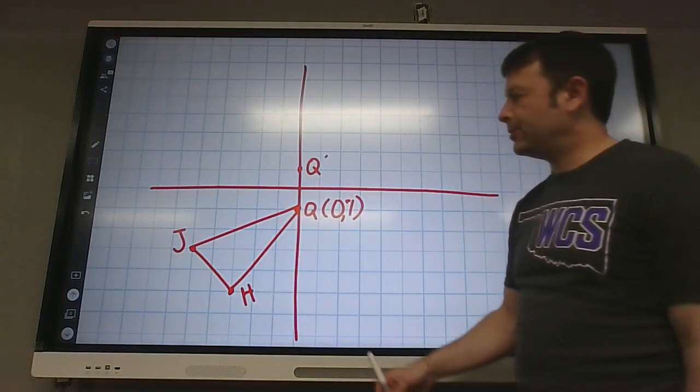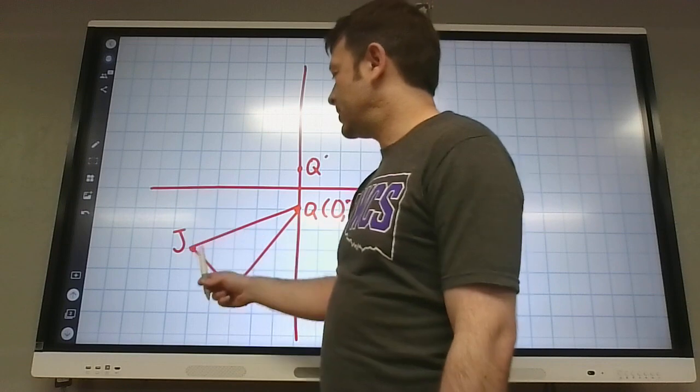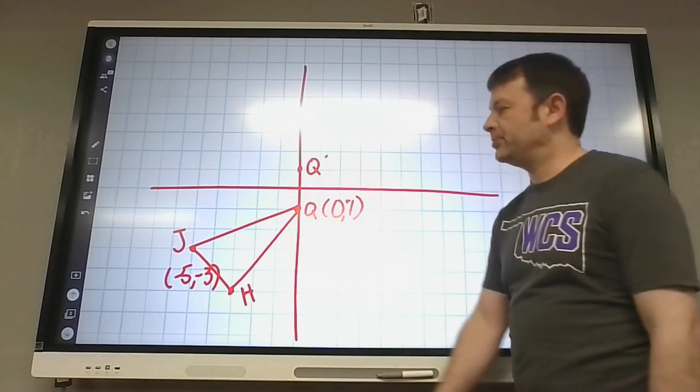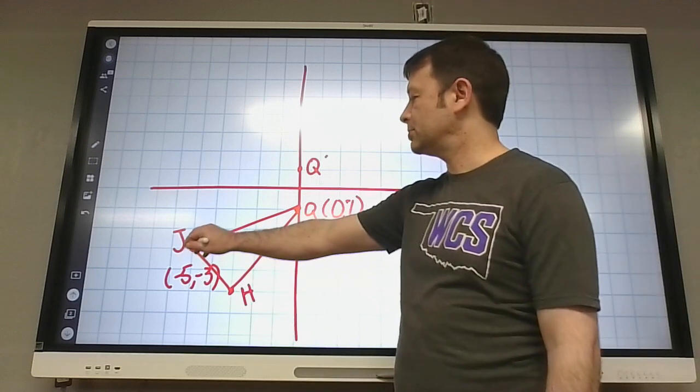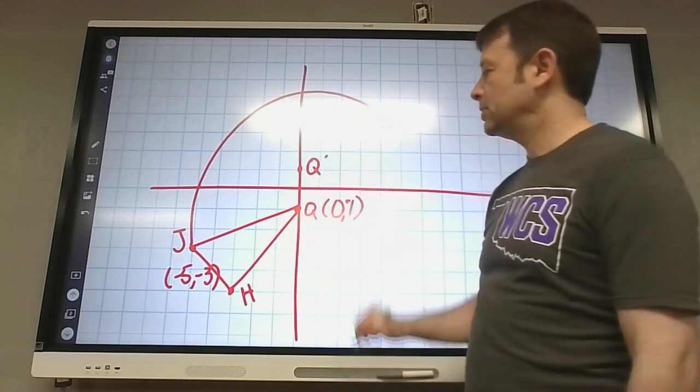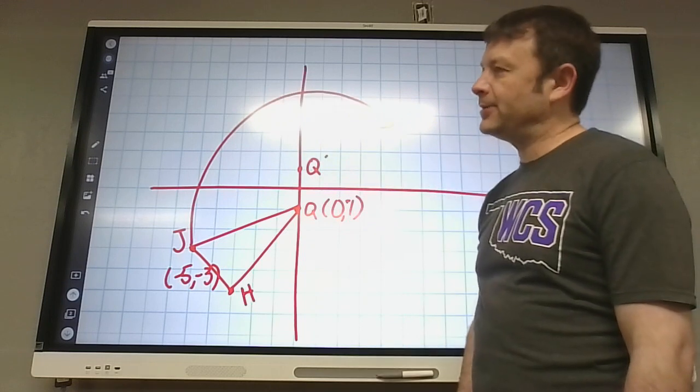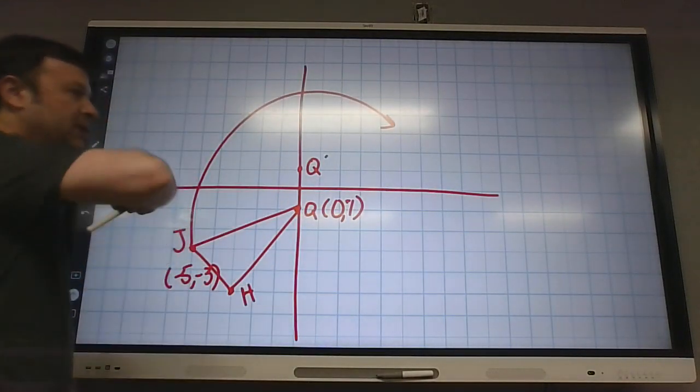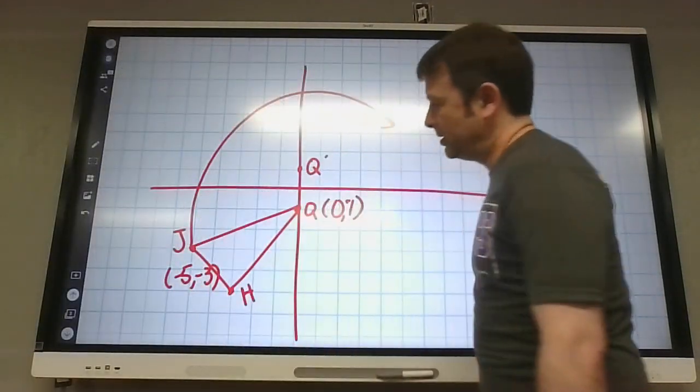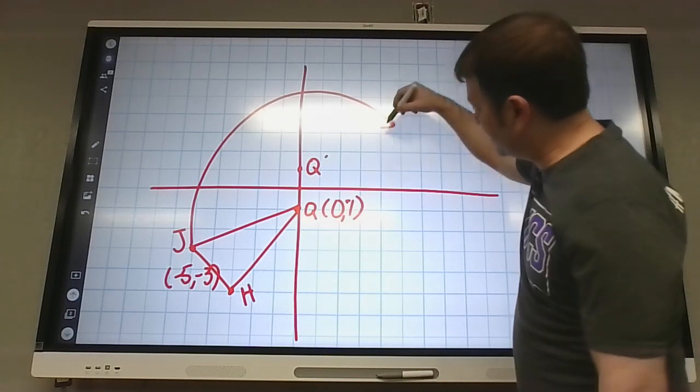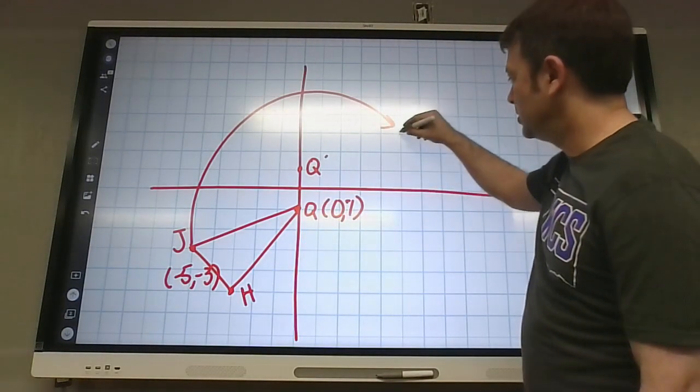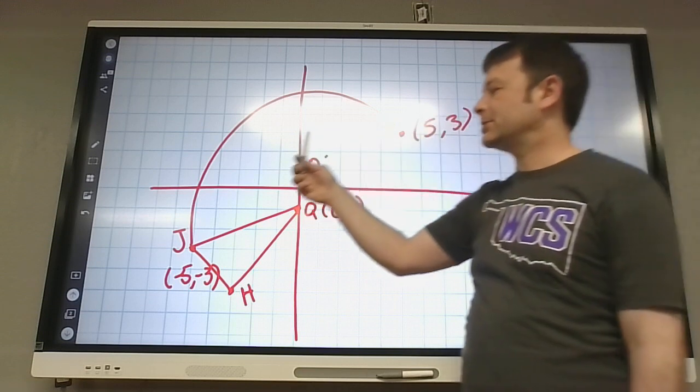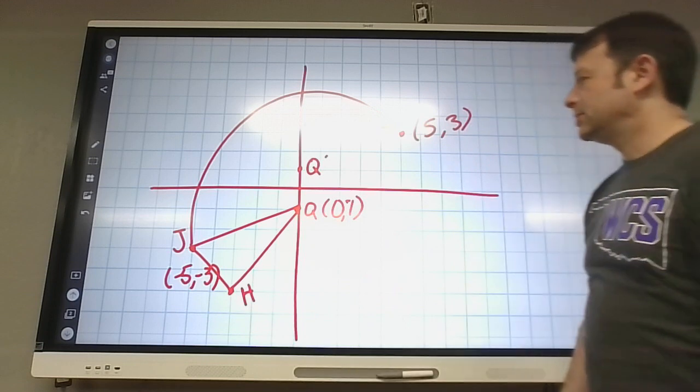Okay, J right now is at negative 5, negative 3. So where do you guys think it will be if we rotate it about the origin? It's kind of like if I look at it this way, it's like down 5 and right 3. And then if I flip my head 180, it would be down 5, right 3. So yeah, it's at positive 5, 3. So what happened to the coordinates? Opposites. So yeah.